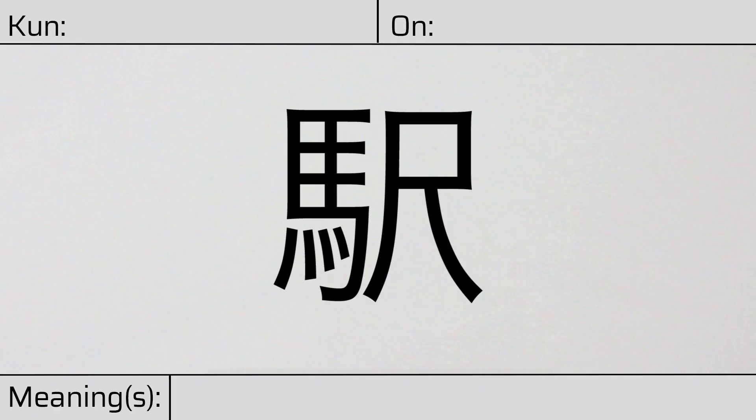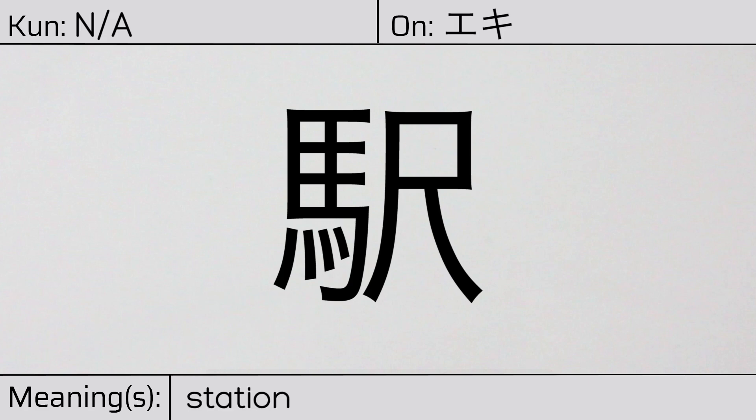Welcome to this lesson on Japanese Kanji. Today, we'll be discussing this character. This Kanji has no kunyomi or Japanese readings, but it has an onyomi or Chinese reading of ikki. This character has the meaning station, as in train station.